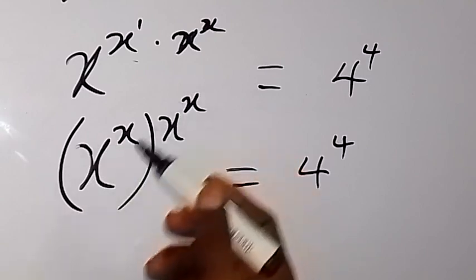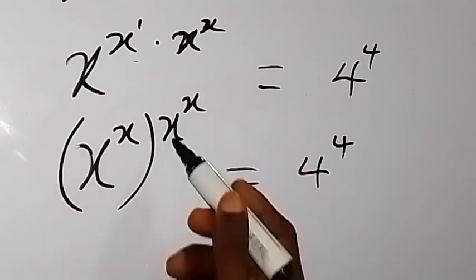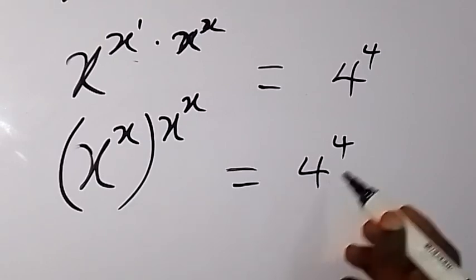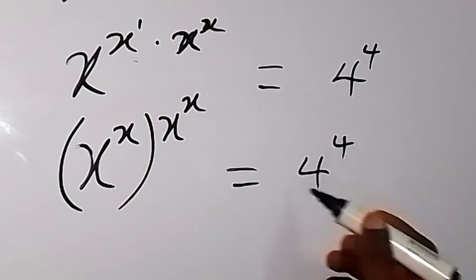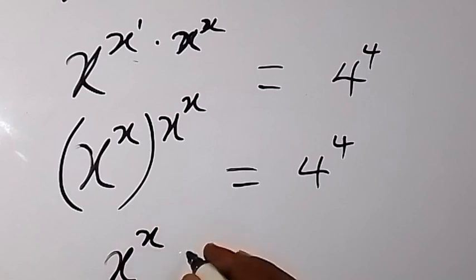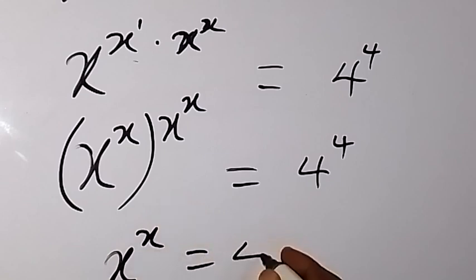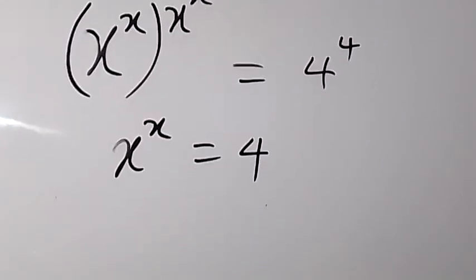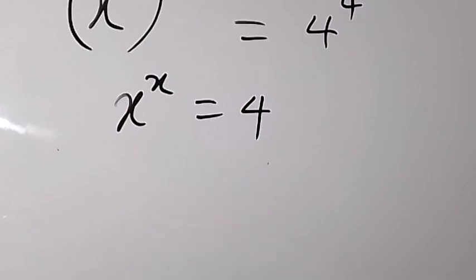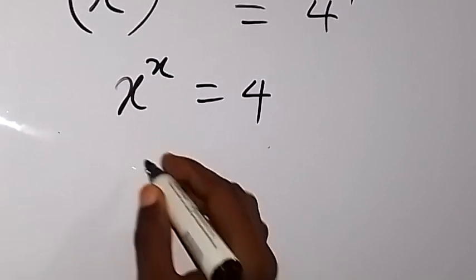Racing to the same number — so x raised to power x equals 3 raised to power x raised to power x. On the right-hand side as well, we can see that we have the same number as the base and the power. So clearly from here we can see that x raised to power x equals 4, which we can write again as x raised to power x.